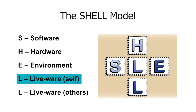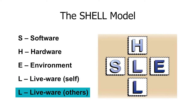Now let's talk about liveware. This is where it gets personal — it's the human element. The people in the control facilities, control tower, and maintenance hangar. Humans are wonderfully complex but also prone to errors. The first liveware in the SHELL model looks at how these humans interact with all the other elements: software, hardware, and environment. Are the rules, regulations, and checklists easy to understand? Is the equipment user-friendly? Can they work without distractions?